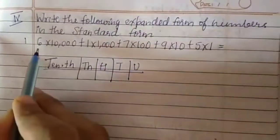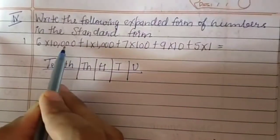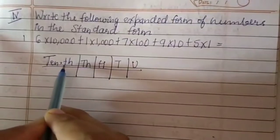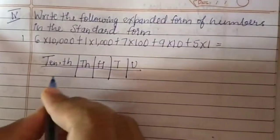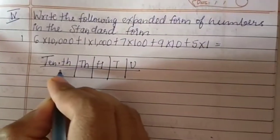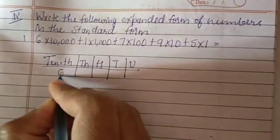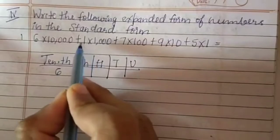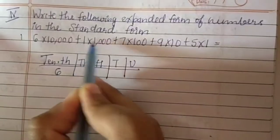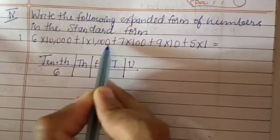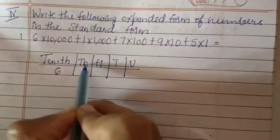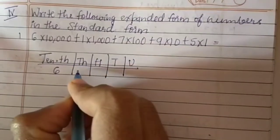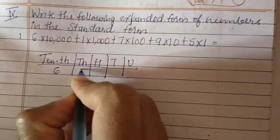6 into 10,000 is 60,000 — it will come under the 10,000 place, so I am writing 60,000 there. Then 1 into 1,000 is 1,000 — it will come under the 1,000's place, so I am writing 1,000 there.